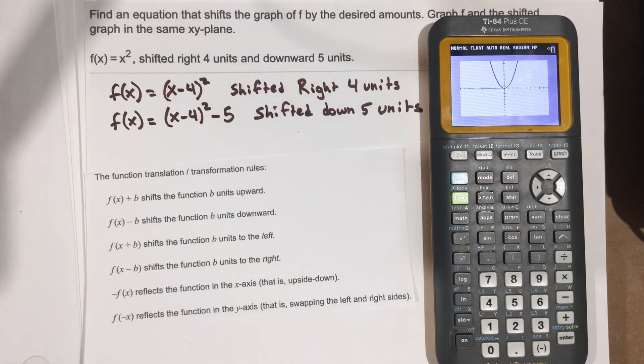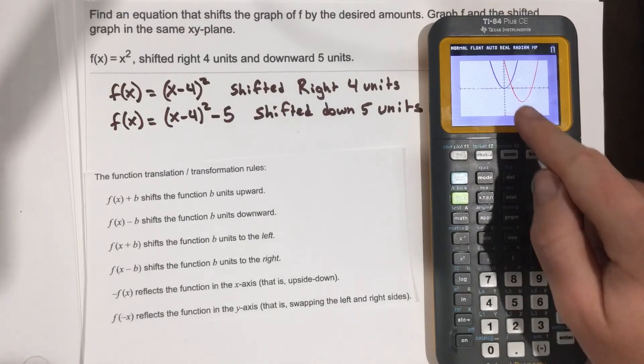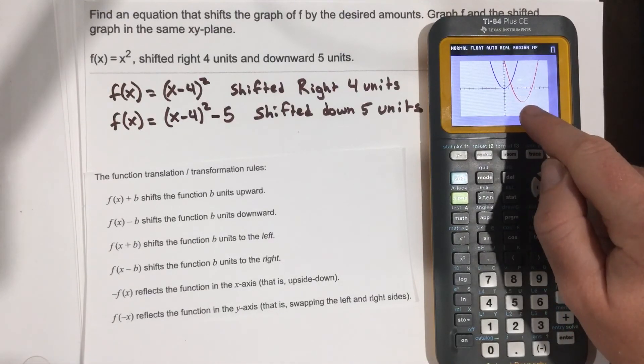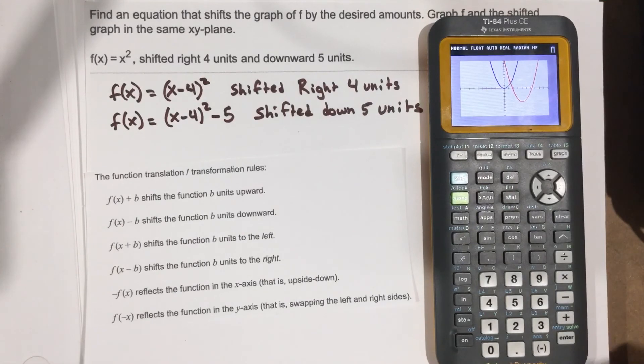There's the first one. That's the parent function. And you can see that this is shifted to the right, the right 4 and down 5. And so you can see what phase shifts do to the function.